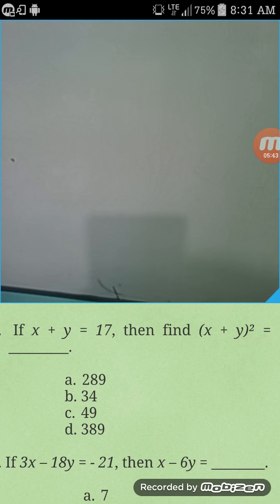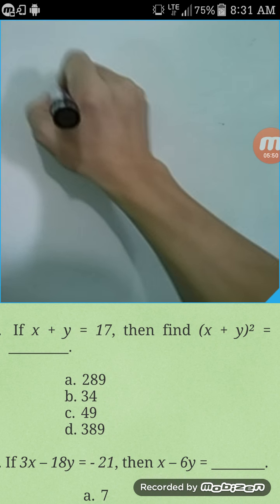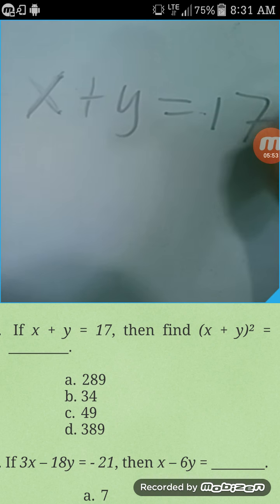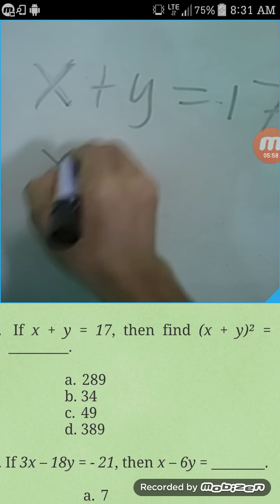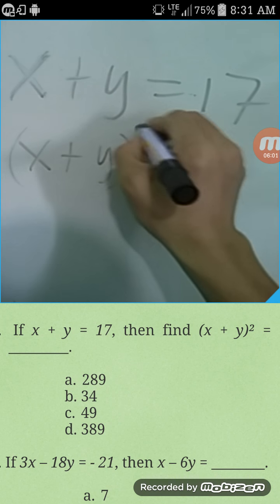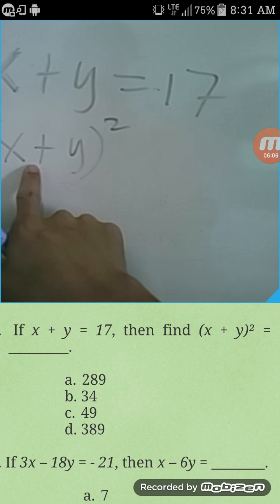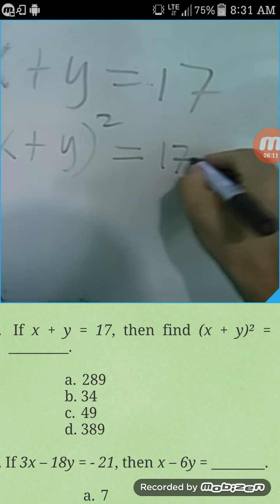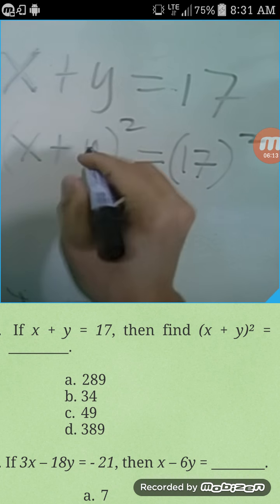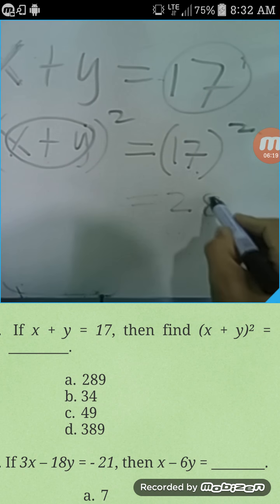Next: if x plus y equals 17, find the value of x plus y, all squared. Since x plus y equals 17, we simply substitute: (x plus y) squared equals 17 squared, which is 289.